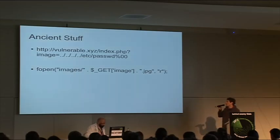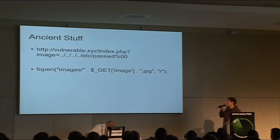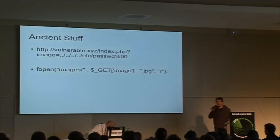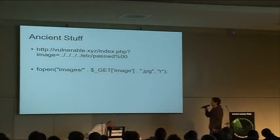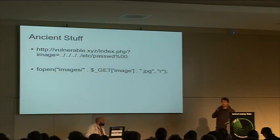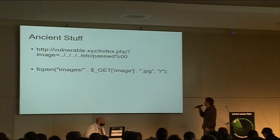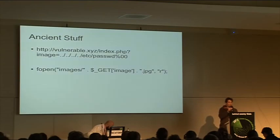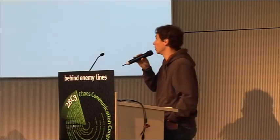Everyone has probably seen something like this: a PHP application where you try to open a file, you give it a prefix and an appendix, and in the middle there is an attacker-controlled string. An attacker can get around the prefix — the images folder — by putting dot dot slash in front of the path. And to get rid of the dot JPEG at the end, he can use a nullbyte, because when that string is passed to the underlying C library, it gets cut off at the nullbyte since C treats null as string termination.